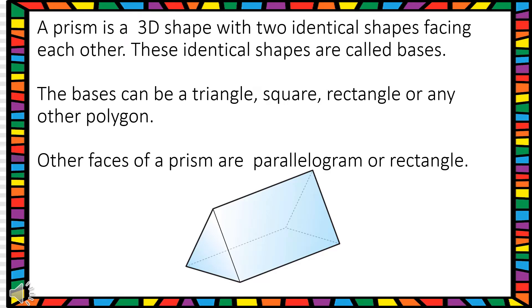A prism is a 3D shape with two identical shapes facing each other. These identical shapes are called bases. The base can be a triangle, square, rectangle, or any other polygon.